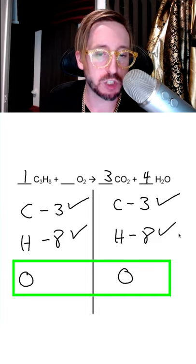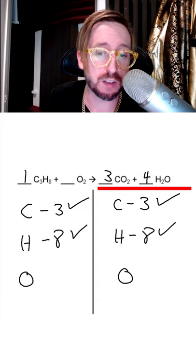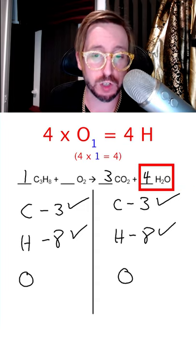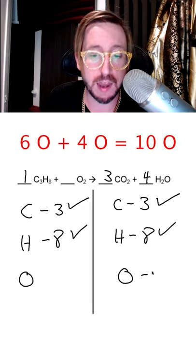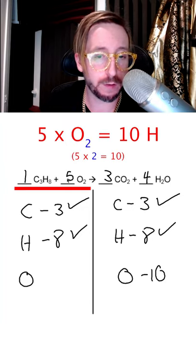In the final step, we're going to look at how to balance the oxygen. Looking at the left here, we have no number in front of the oxygen. But looking at the right, we have 6 oxygens from the CO2 and 4 oxygens from the water. So that gives us a total of 10 oxygens. And the only way for there to be 10 oxygens on the left is to put a 5 in front of here, which will give us 10.